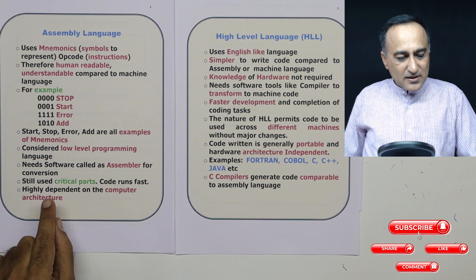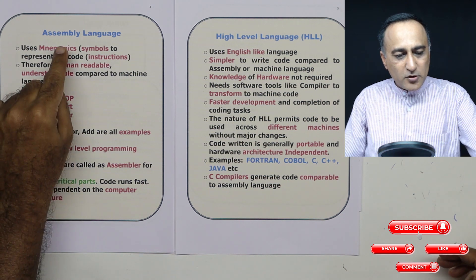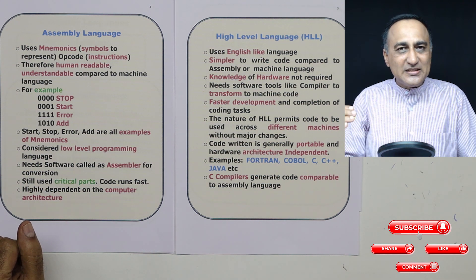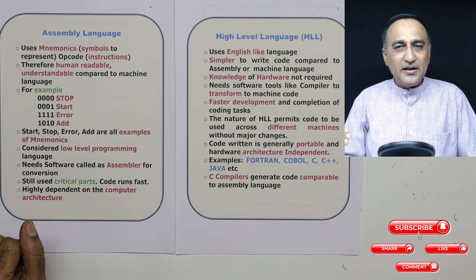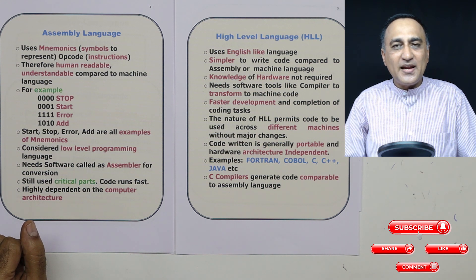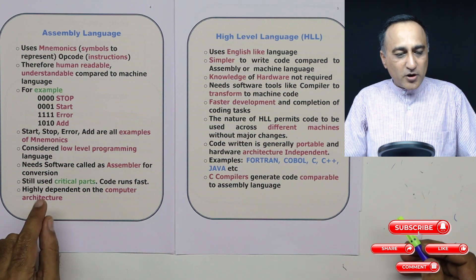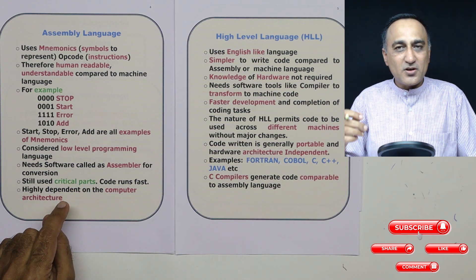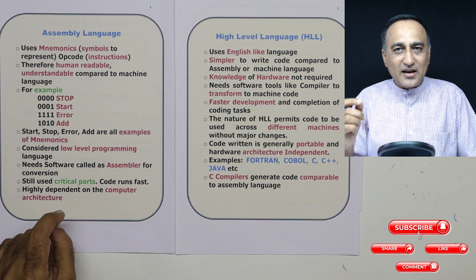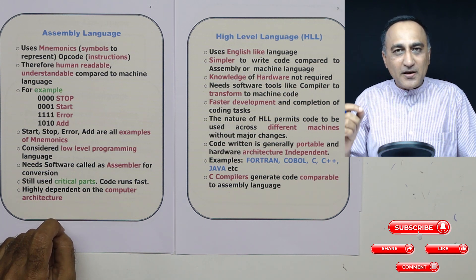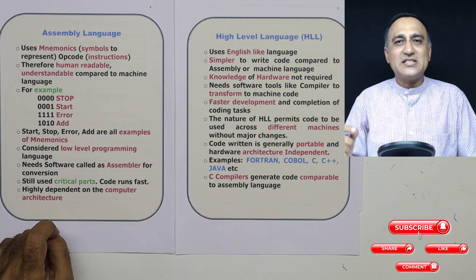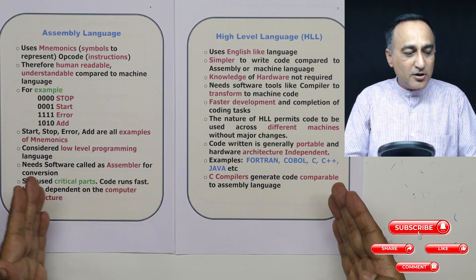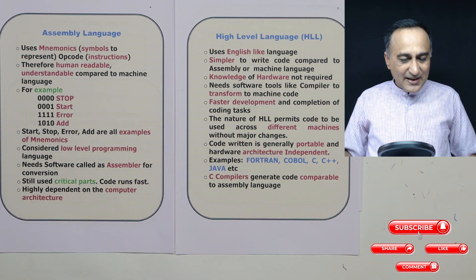In critical parts we tend to use assembly level language, but of late, C compilers are so good at converting your code from C into very optimal machine language code that whatever you require with assembly, you can easily do with C language. C compilers have such a strong ability that they convert code written in high level language to very efficient assembly level language code, guaranteeing you performance comparable to assembly level language.